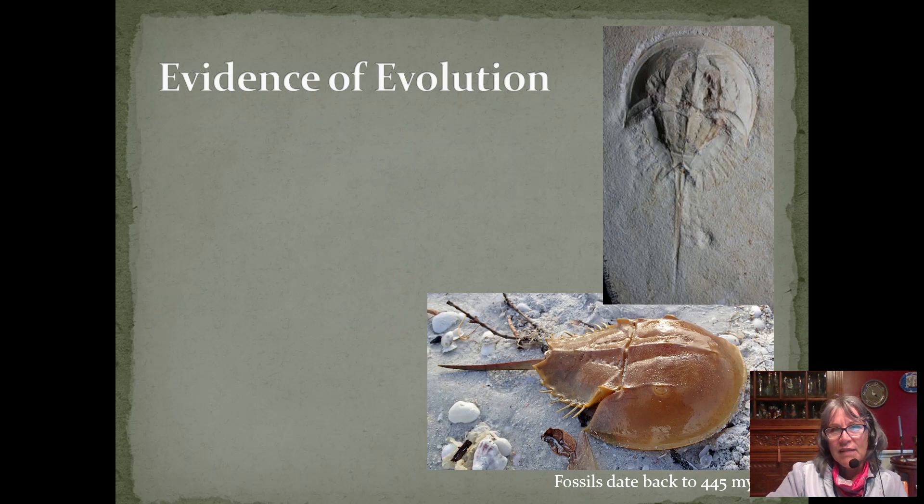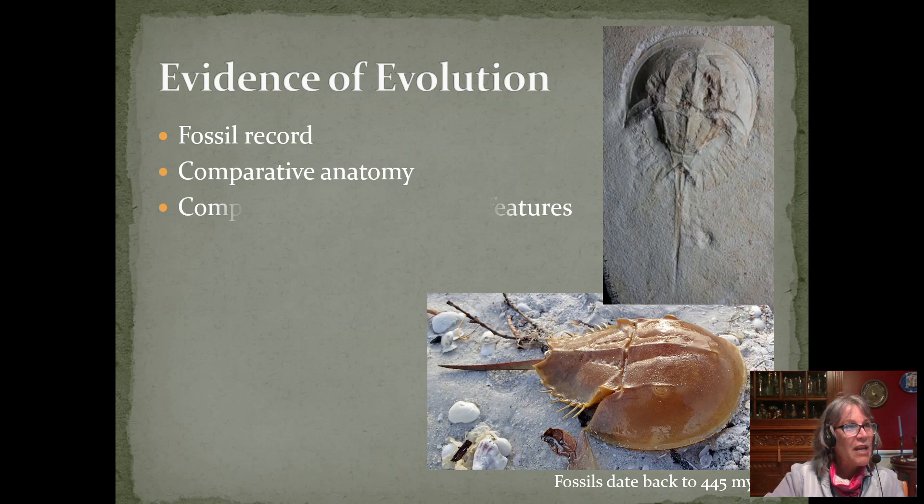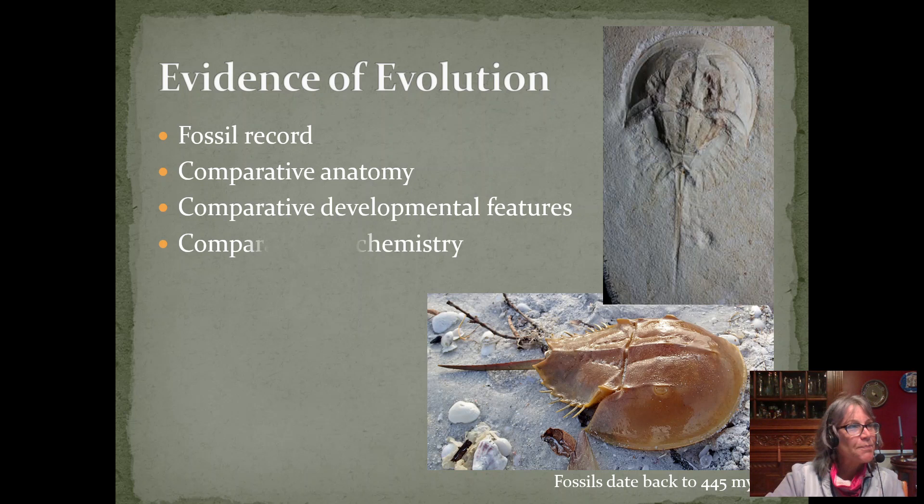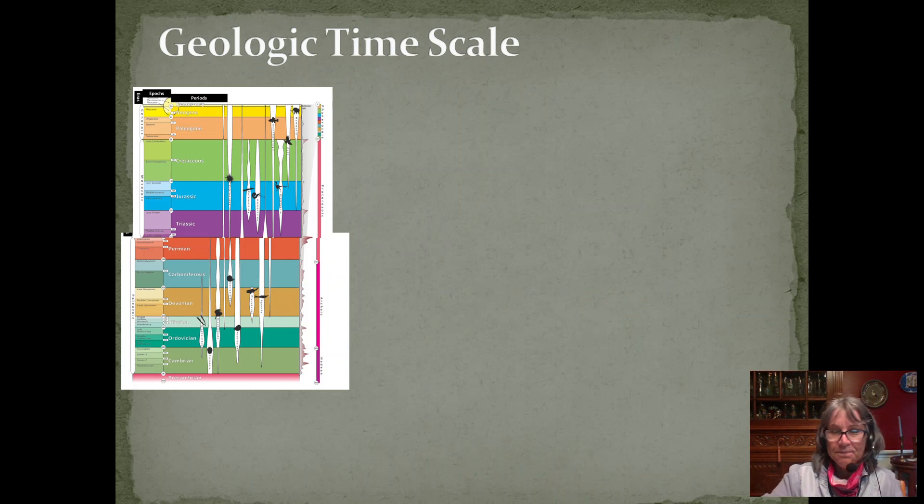So our evidence of evolution that we're going to look at in this lab includes: the fossil record, comparative anatomy, comparative developmental features and embryonic development, comparative biochemistry, and biogeography. First we're going to look at geological time scales and be able to analyze these events.